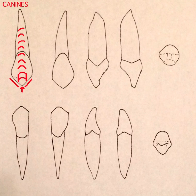For proximal contacts, on the mesial side the contact is at the junction of the incisal and middle thirds, and then from the distal side it's in the middle third of the tooth.